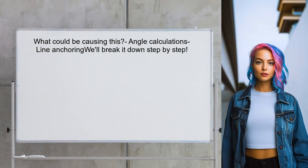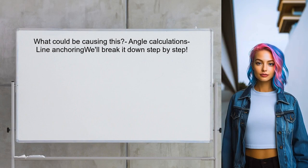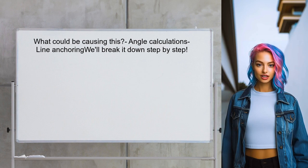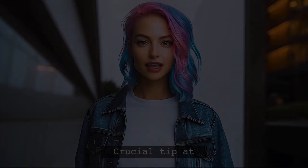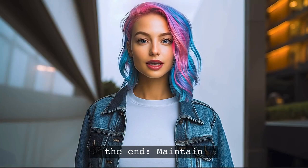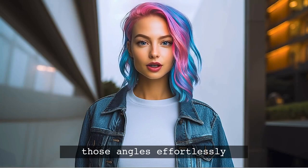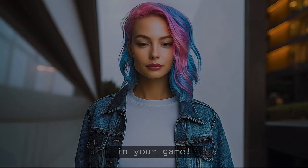So what could be causing this issue? The problem often lies in how the angles are calculated and how the lines are anchored. We'll break it down step-by-step so you can understand how to achieve that perfect 30-degree separation. And don't go anywhere — I've got a crucial tip at the end that will help you maintain those angles effortlessly in your game.